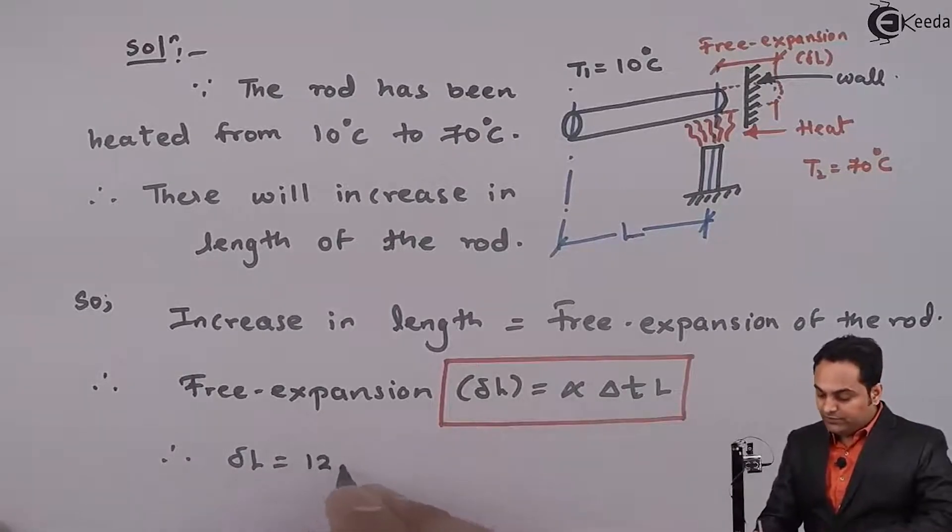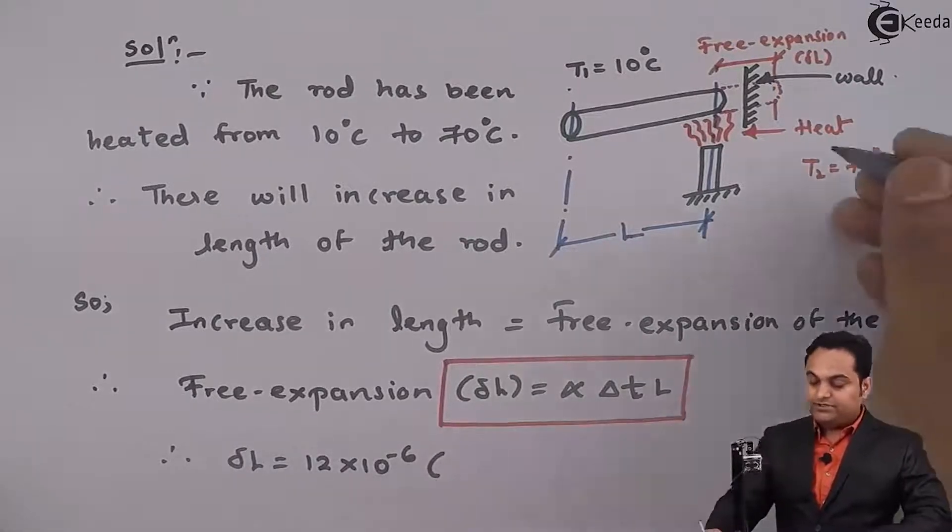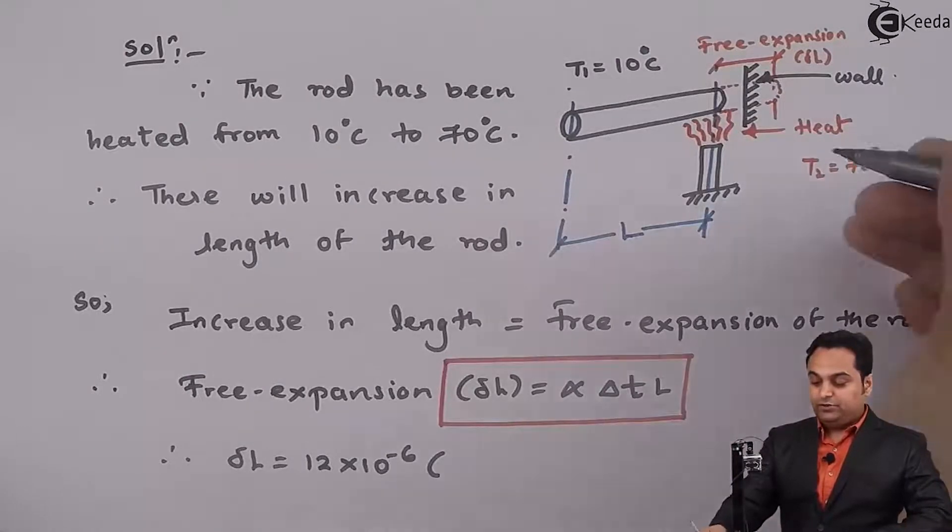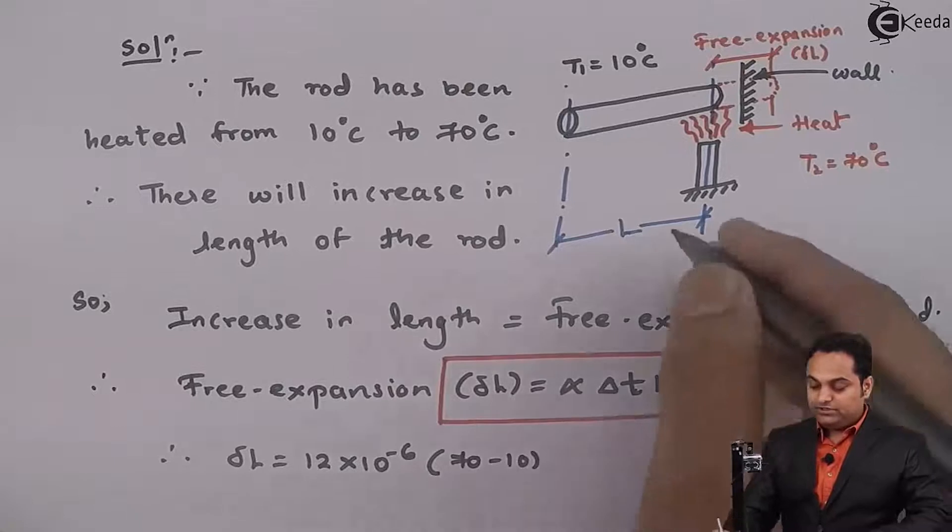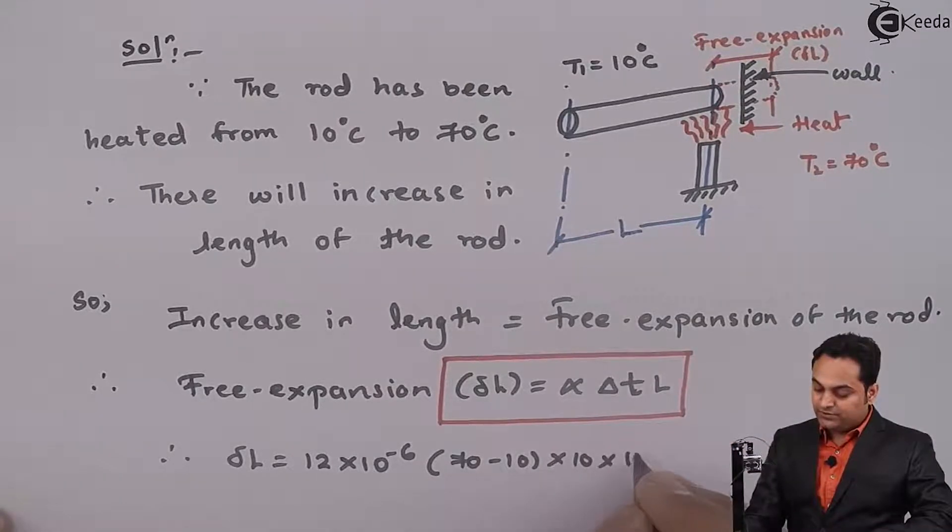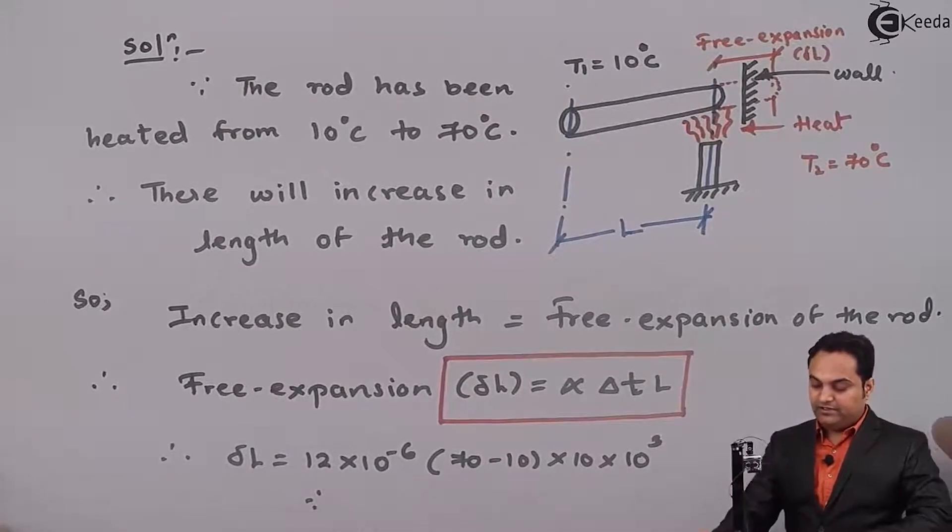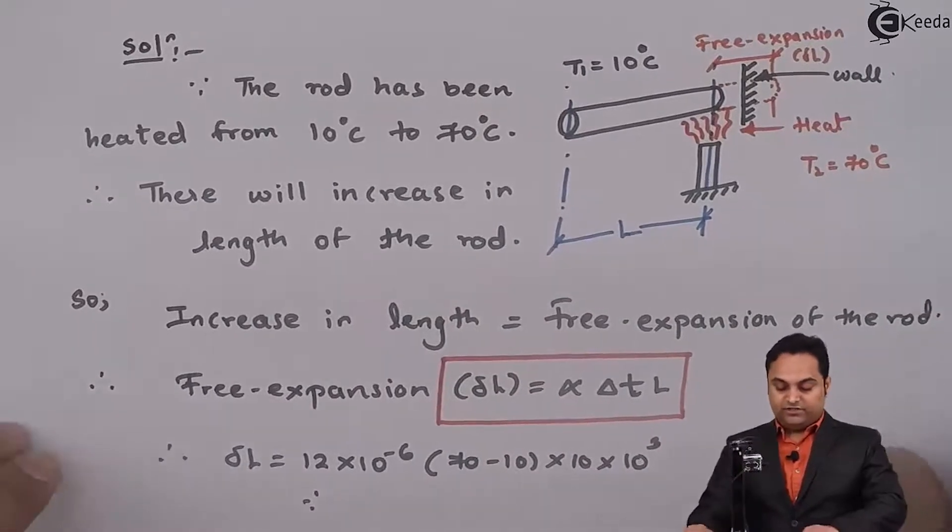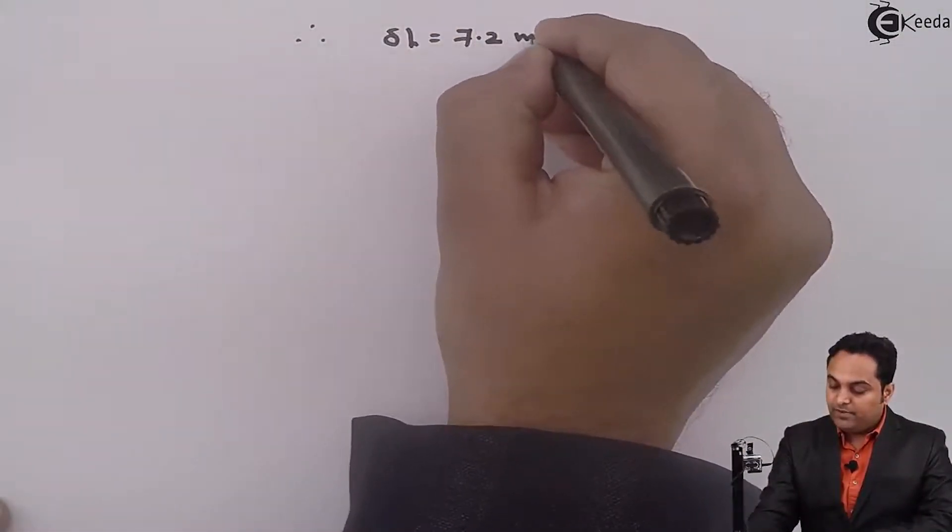Delta L is equal to α, it is 12 × 10⁻⁶. Delta T, since the temperature difference is T2 minus T1, so it is 70 minus 10. Original length is 10 meter, so in mm, it is 10 × 10³. So, from this, here I will get the value. I will write it onto the next page. The free expansion comes out to be 7.2 mm.